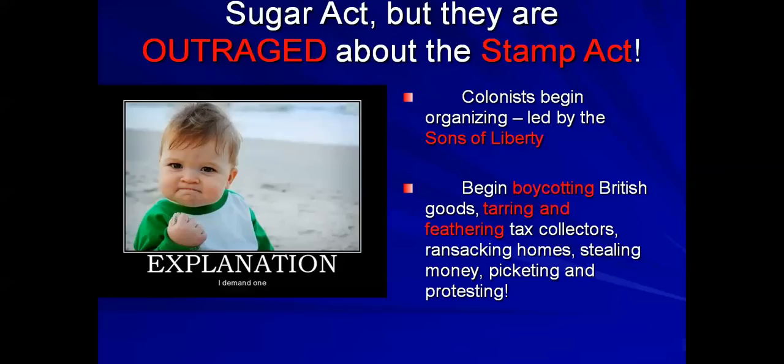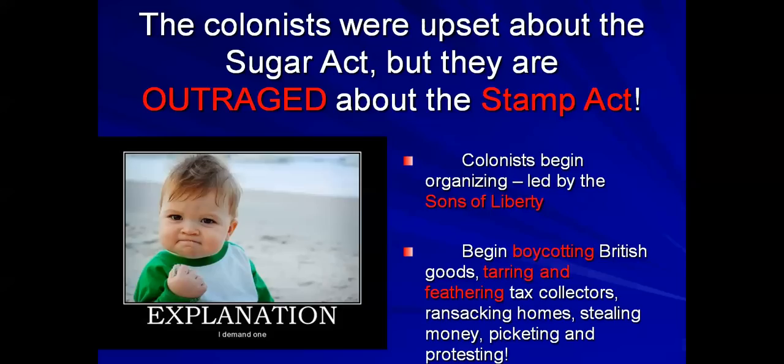If the colonists were upset about the Sugar Act, they were downright outraged about the Stamp Act. After the Sugar Act, they began organizing the Sons of Liberty — whom the British government really looked at as a terrorist group — but who became a really patriotic group. This was happening mostly in New England, with the epicenter in Boston. Sons of Liberty, including famous names like Sam Adams, John Hancock, and Paul Revere, began organizing large-scale boycotts and getting the word out through committees of correspondence, with Paul Revere riding through the colonies on horseback delivering messages.